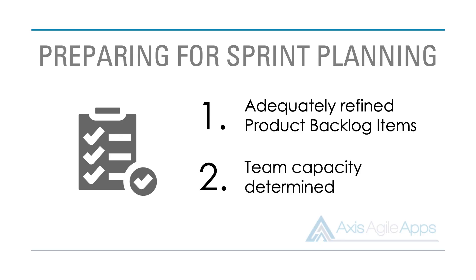Well-defined product backlog items is one requirement for sprint planning. Secondly, we need to make sure our team has figured out their capacity — in other words, what they can actually get done within a sprint. To determine that, they need to know how much time they have or what workload they can take on in the upcoming sprint cycle. Determining the team's capacity will depend on the approach: either using story points and average velocity, or if using time, calculating how much time each person has. I'll share how I do that in a subsequent video in this series.